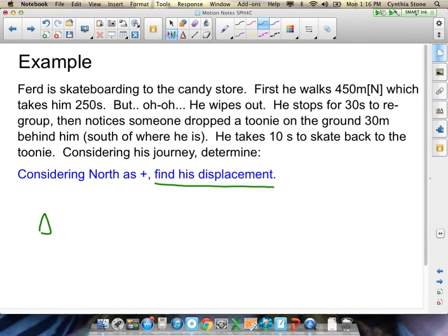The way that I would write that then is I'd say, okay, his displacement is, well, first is this, 450 meters north. I'm going to say that's plus 450 meters. And then he stops, he stays still, then he walks 30 meters behind him, which is south.